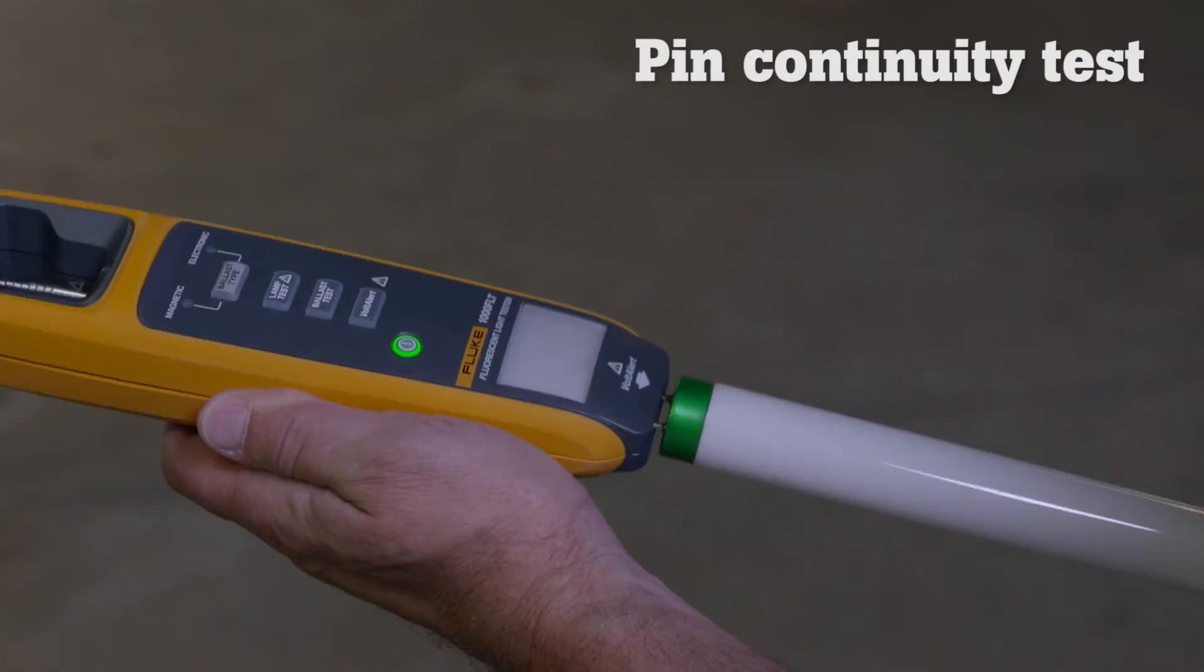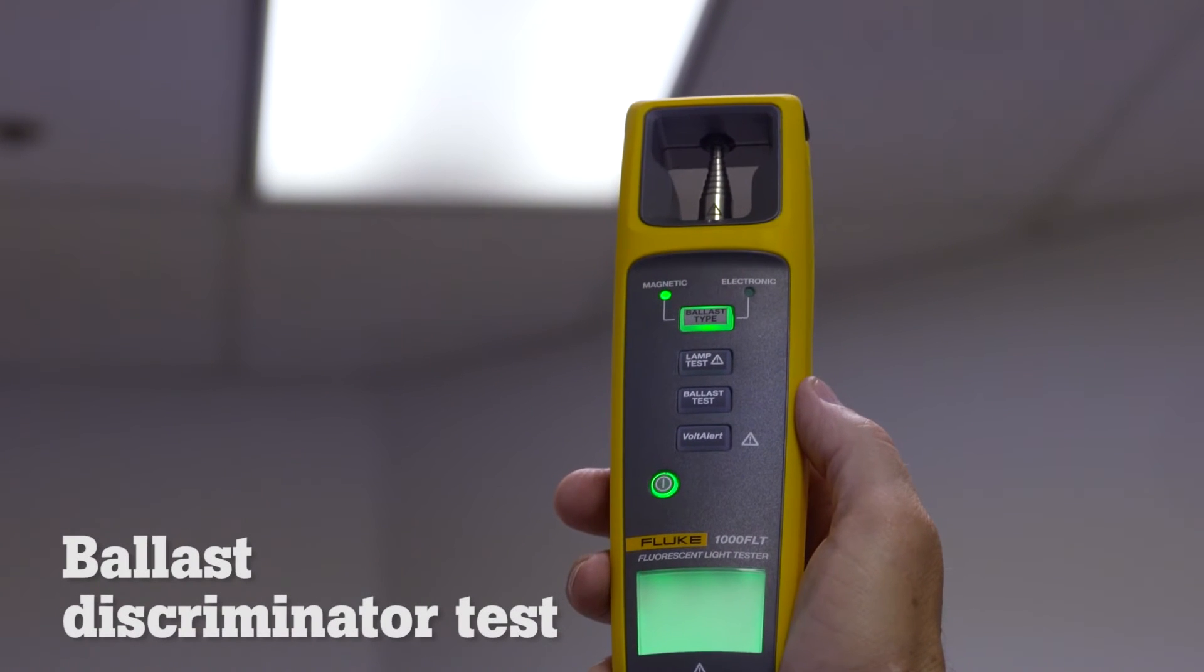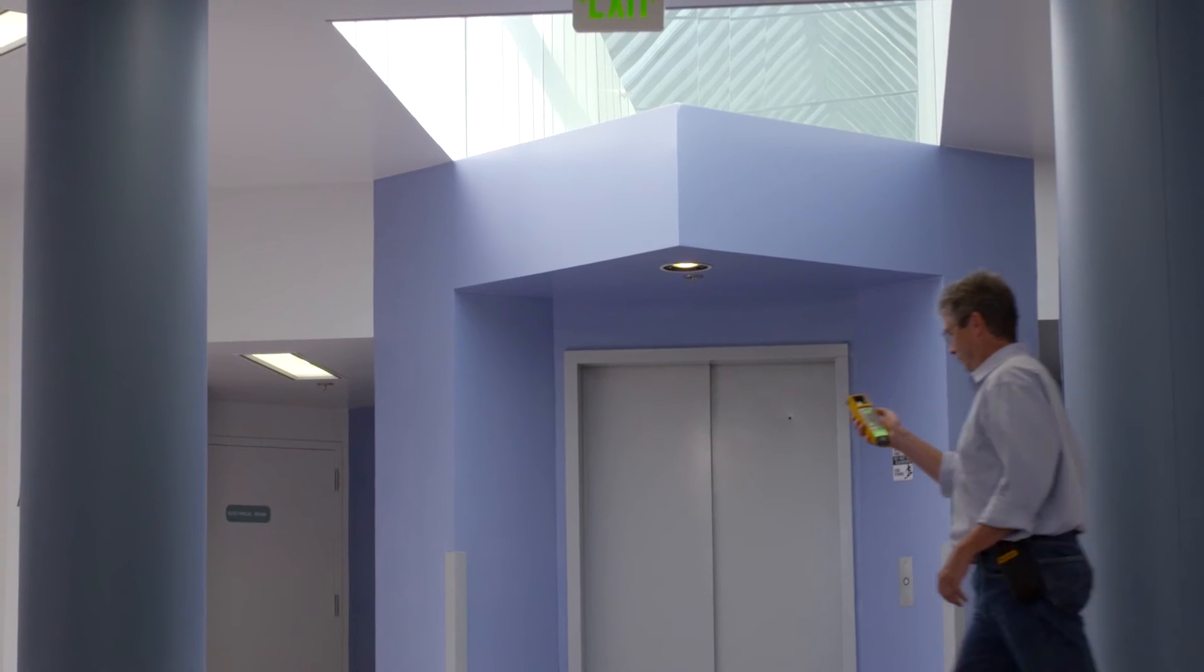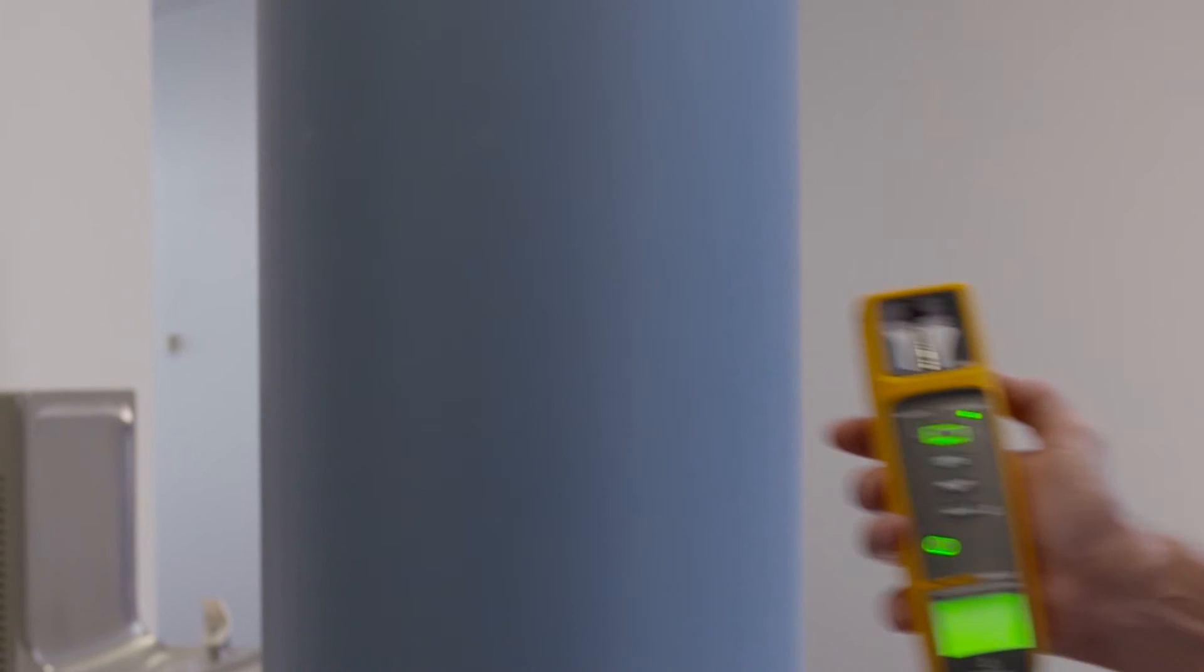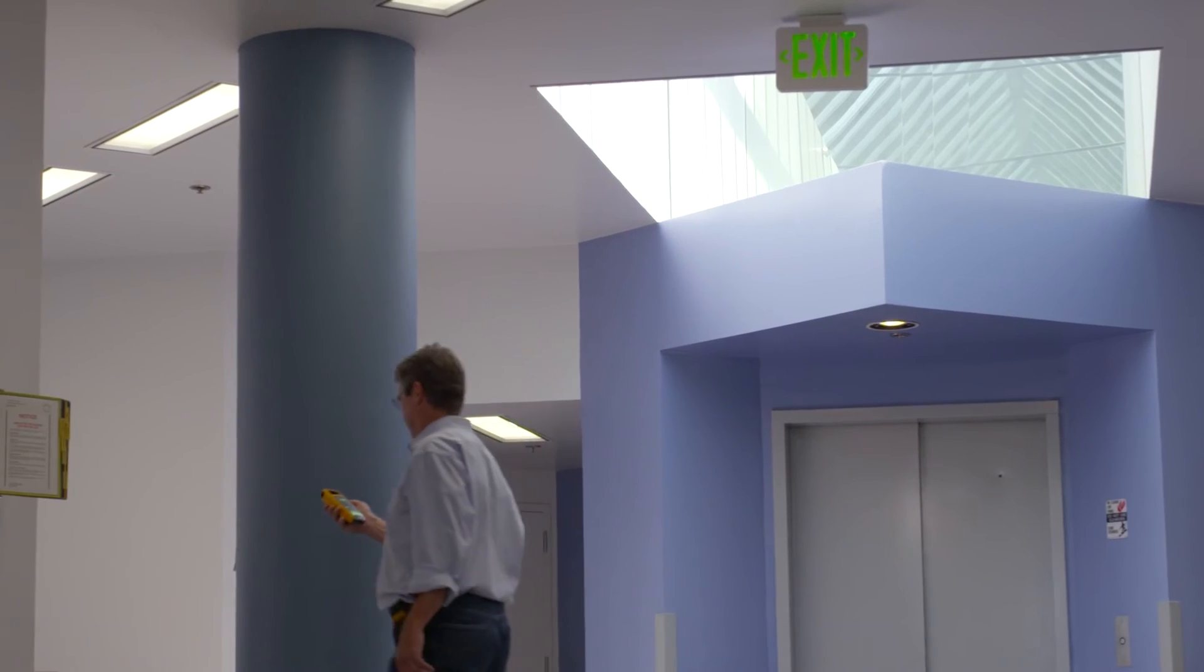The pin test checks if filaments have continuity. And the ballast type test determines if you're dealing with an old power-hungry magnetic ballast or an energy efficient electronic ballast without taking the fixture apart.